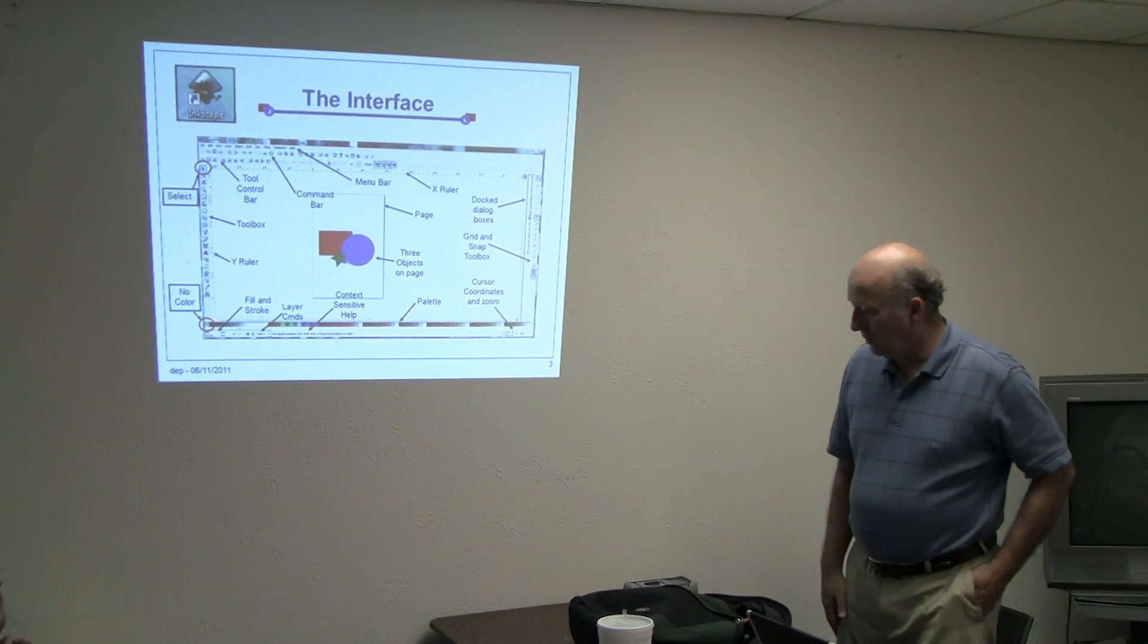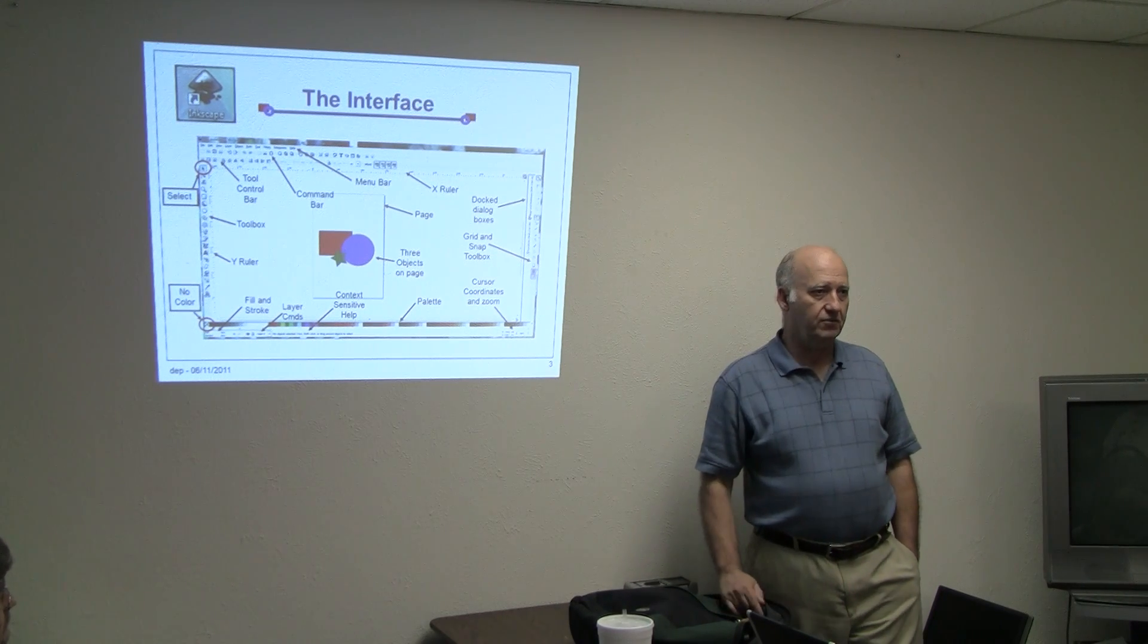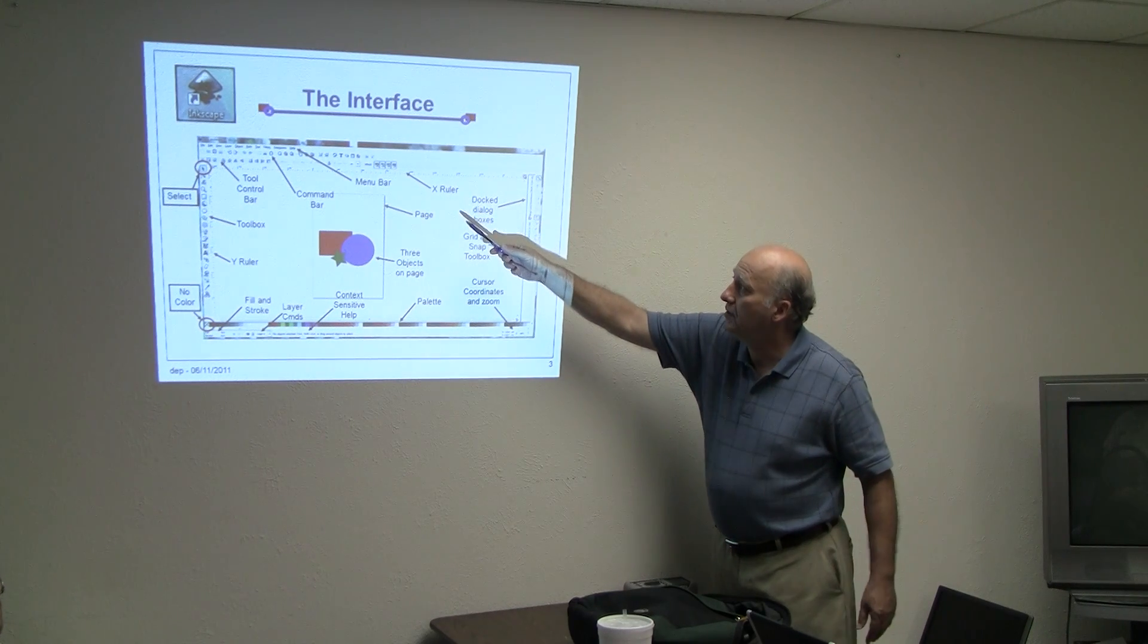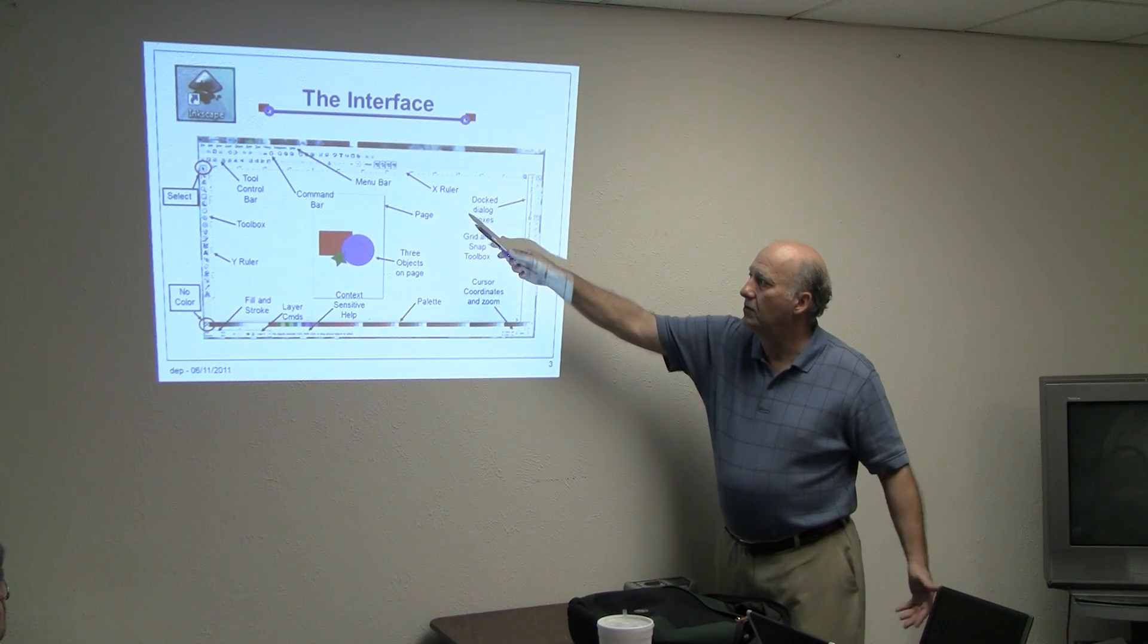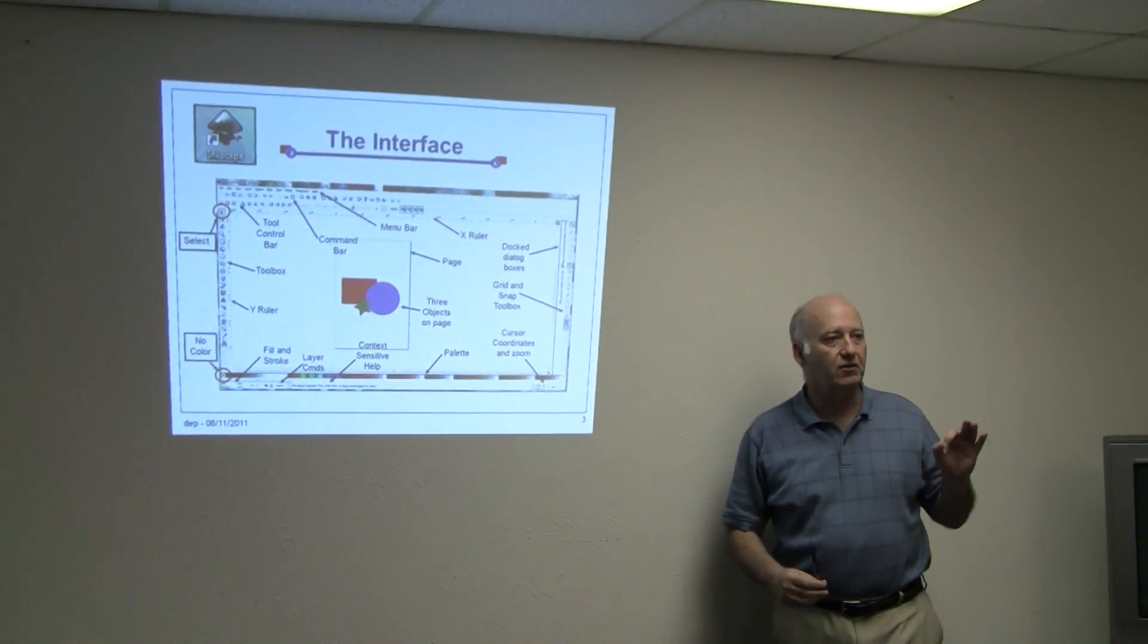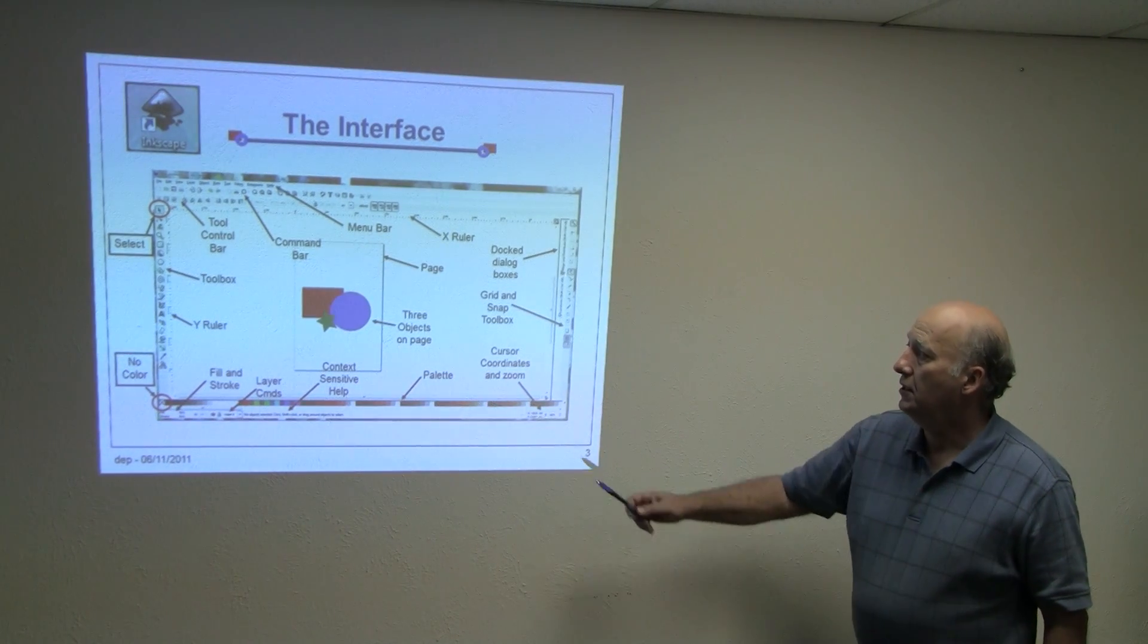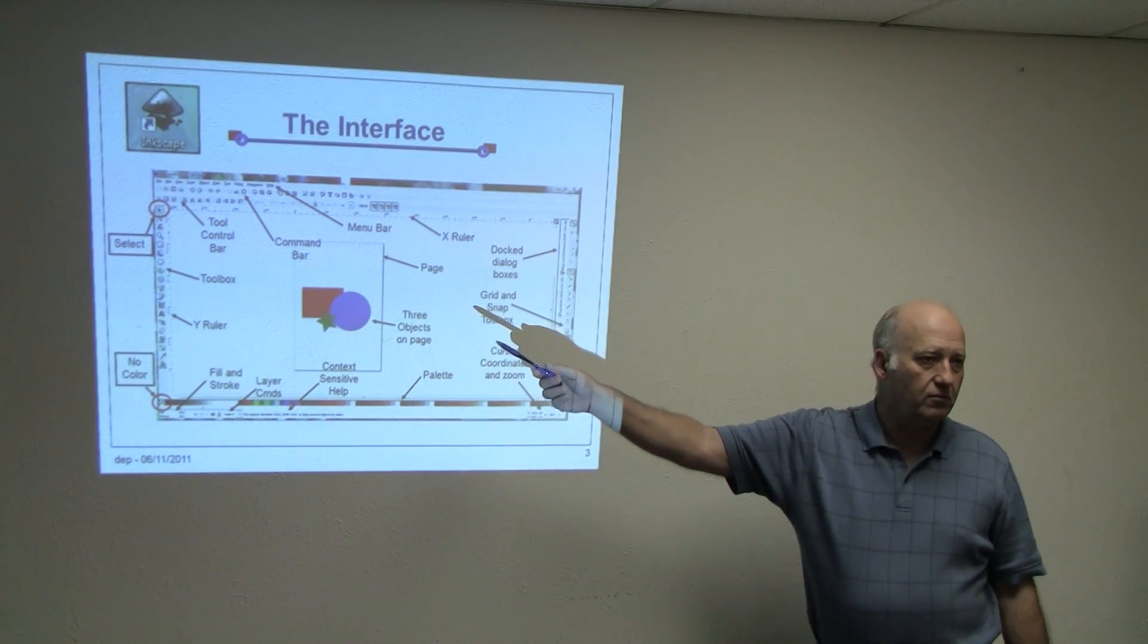The first thing we need to do, most people are pretty familiar with computer programs, so this interface is going to be pretty quick. You have the menu bar up on the top, just like all Windows type programs. The next bar is the command bar, not something we're going to worry too much about. The tool control bar, that we're going to be using a lot. So when you pick a specific tool, the tool control bar will change, and the options, the most common options you're going to need will be on that tool bar.